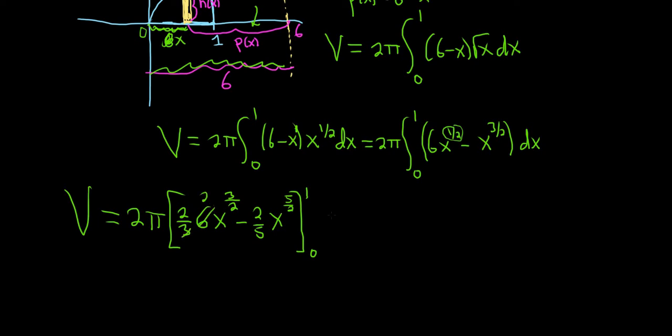Let me go ahead and rewrite that. So 2 pi, 4x to the 3 halves, minus 2 fifths, x to the 5 halves. And we're going from 0 to 1.